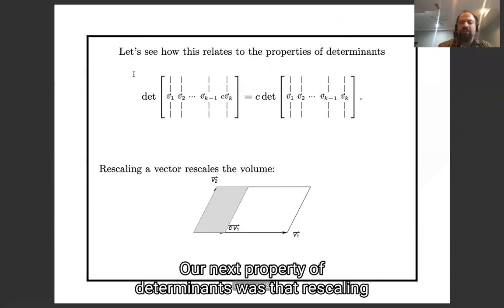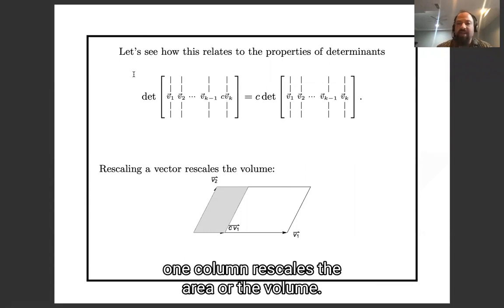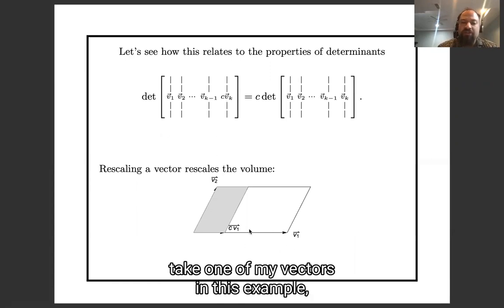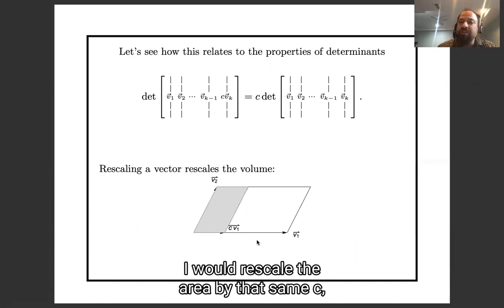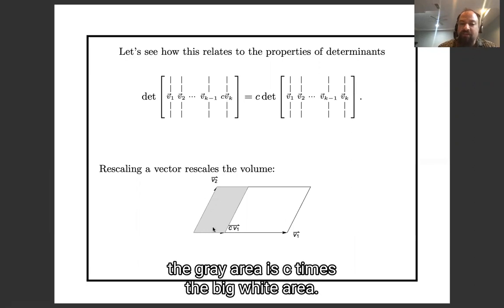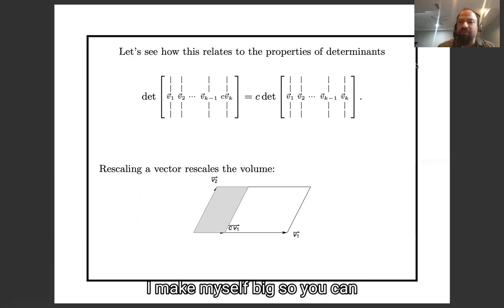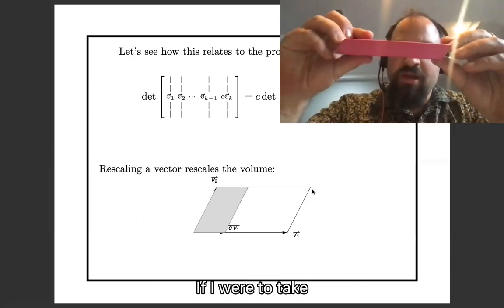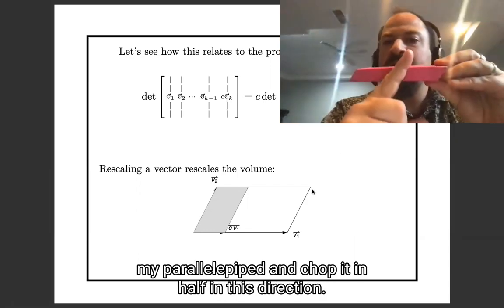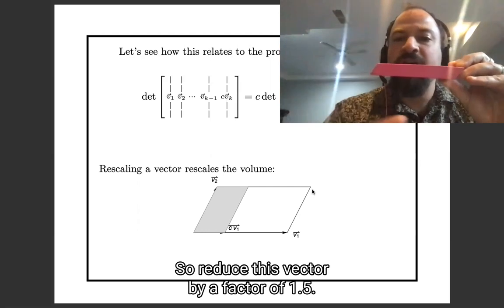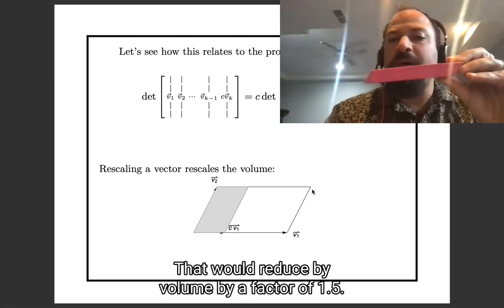The next property: rescaling one column rescales the area or the volume. If I take one of my vectors — say v1 — and multiply it by some scalar c, I rescale the area by that same c. You can imagine this in three dimensions too: if I chop my parallel pipette in half in one direction by reducing one vector by a factor of one half, that reduces my volume by a factor of one half.